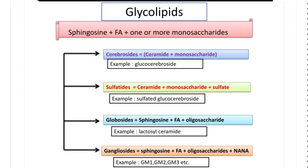Coming to the other type of compound lipid, glycolipids — the name indicates 'glyco' relates to carbohydrate. The composition of glycolipids is sphingosine plus fatty acid plus one or more monosaccharides. Because they contain sphingosine, glycolipids are also known as glycosphingolipids. Since sphingosine plus fatty acid equals ceramide, ceramide is present in these glycolipids. There are four types of glycolipids: cerebrosides, sulfatides, globosides, and gangliosides.